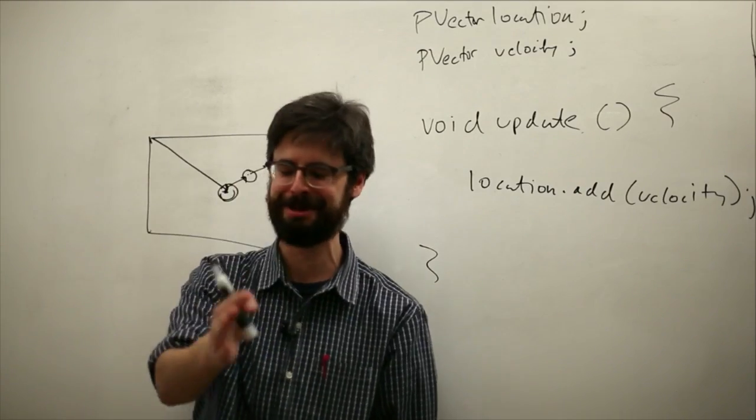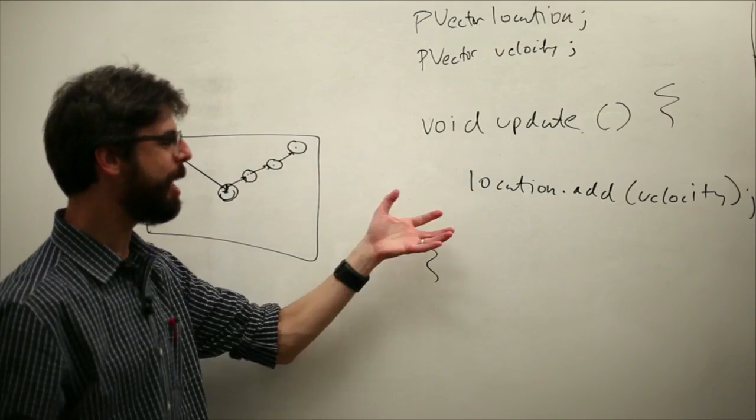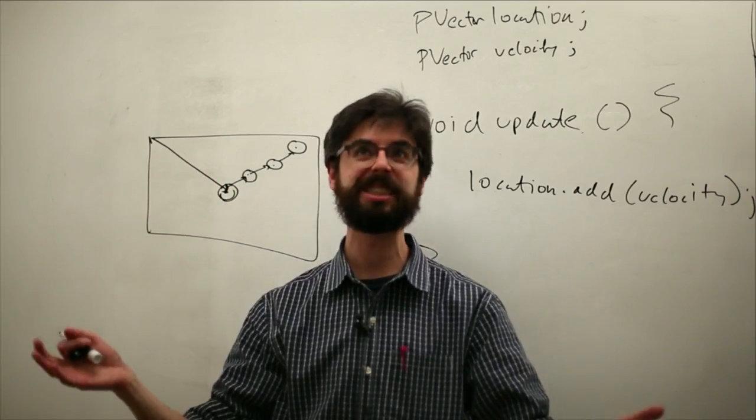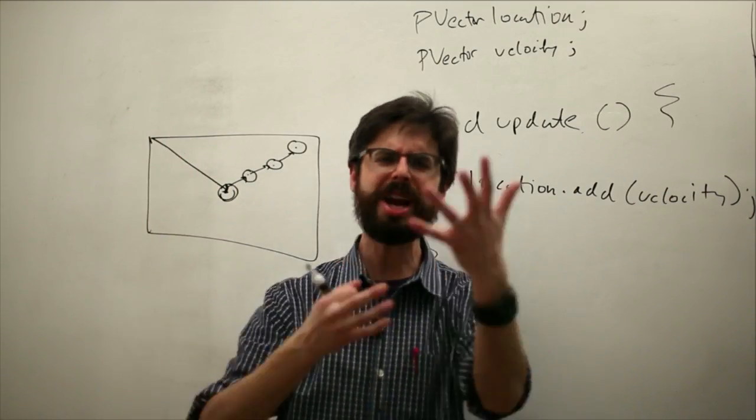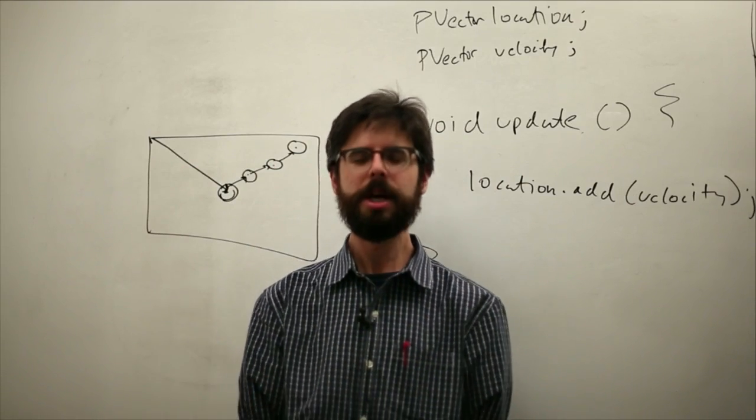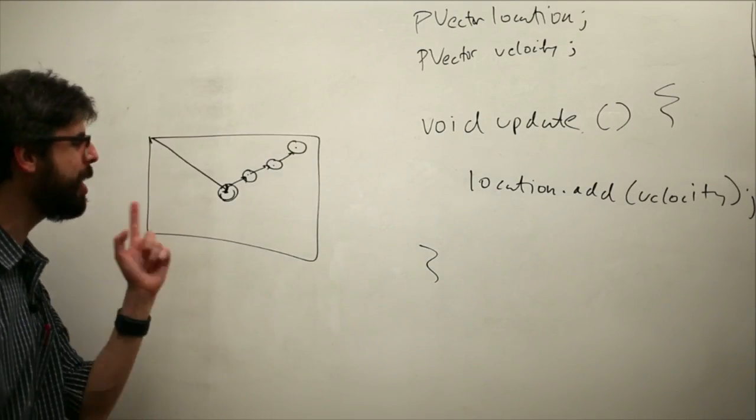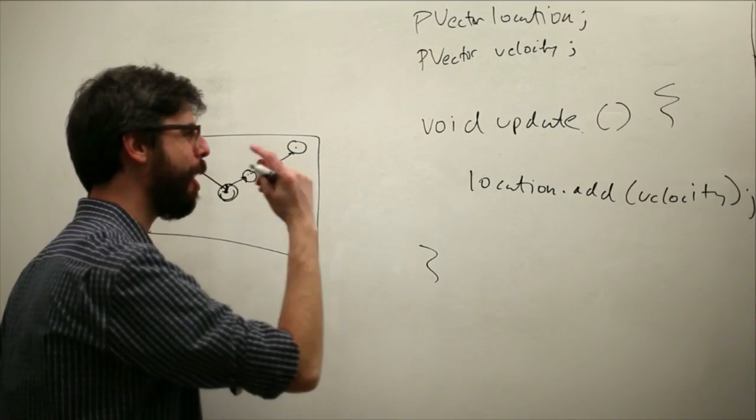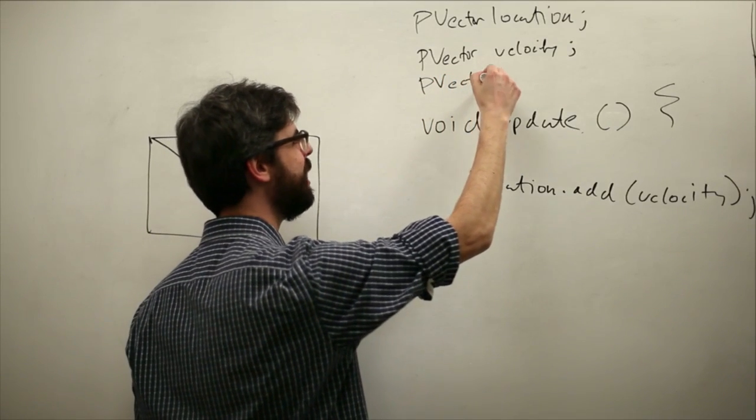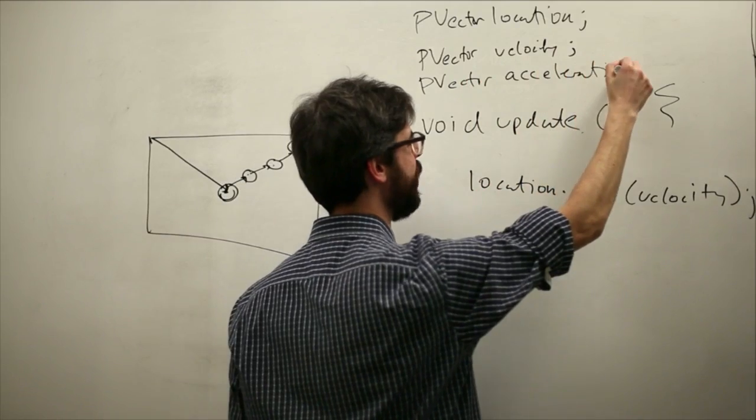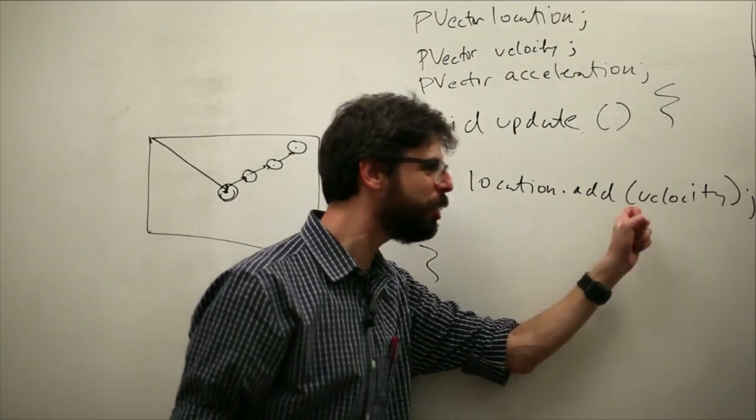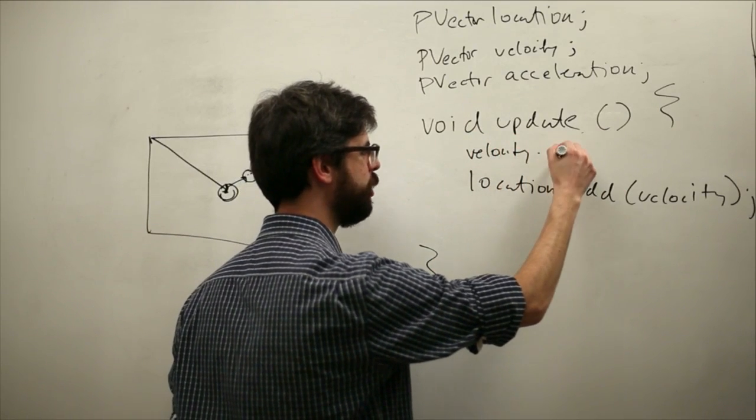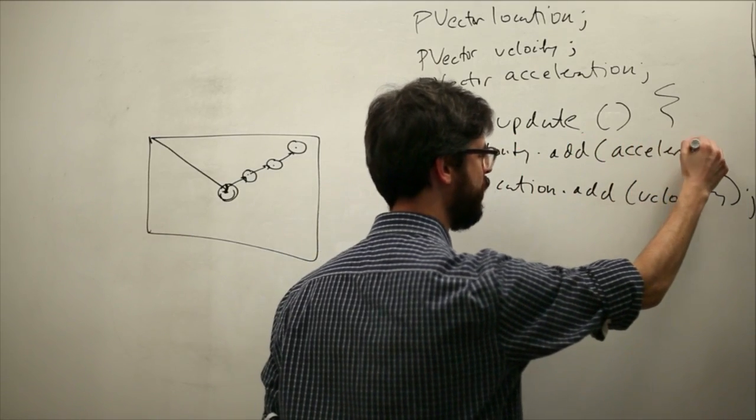So here's the thing. Location changes over time by velocity. We want velocity to change. Our instinct might be to say velocity.x equals a random amount, velocity.y equals a random amount, or maybe velocity.x minus equals 0.1. But no, we need to do this in a much more formal way. We need to add another vector to this mover object. That other vector we're going to call acceleration.